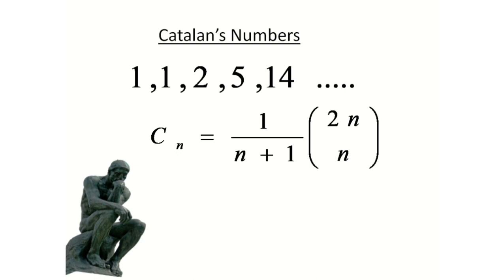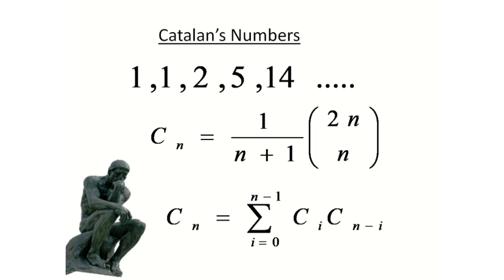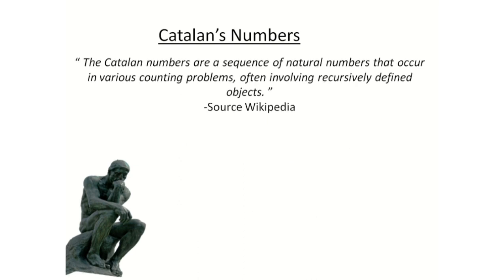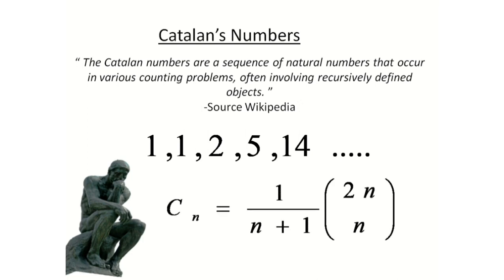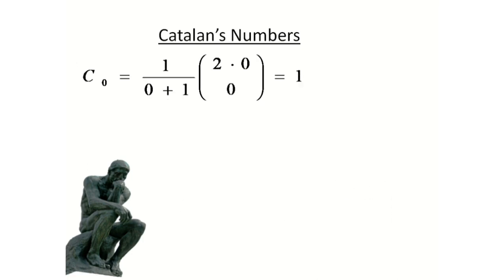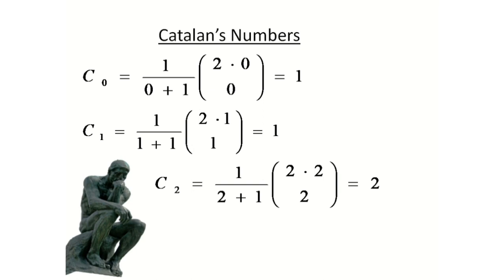We can also write the nth Catalan number in the form of a recursive relation: C(n) is the summation for i from 0 to n minus 1 of C(i) times C(n minus i). There are many strange appearances of Catalan numbers in various counting problems. In this video, we will look at 3 counting problems and how Catalan numbers solve them. You can also find any Catalan number by substituting n with an integer.